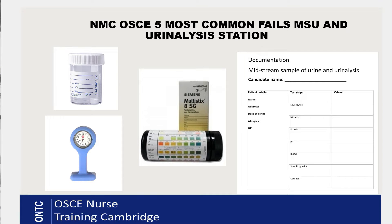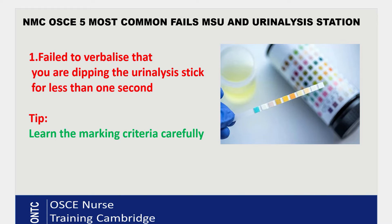Quick refresher: in eight minutes you have to give instructions to your patient — normally a mannequin — on how to collect the midstream specimen of urine, then perform the urinalysis, and finally record your results and tell the patient what you found that was abnormal and its significance. I see it in three stages: instructing the patient on MSU collection, doing the urinalysis correctly, and recording results and explaining findings to the patient.